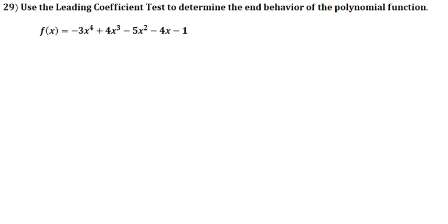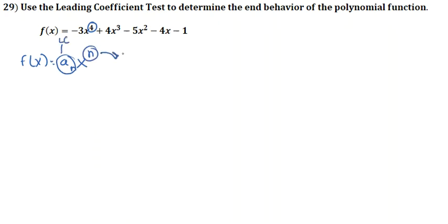To determine the end behavior, you're going to follow a few simple steps depending on your n, which is your exponent. With a leading coefficient, you always want to look at whether it's positive or negative, and your n, which is your exponent.